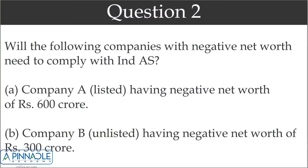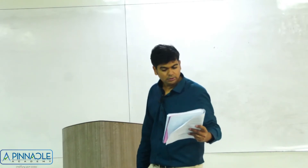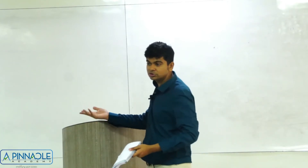Company B is unlisted with a negative net worth of 300 crores. For an unlisted company, Ind AS is not applicable. However, there are situations where you may still have to follow Ind AS — if you become a subsidiary, parent, associate, or joint venture of someone following Ind AS, or if you voluntarily decide to follow it.